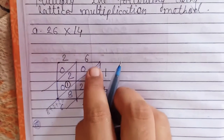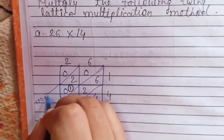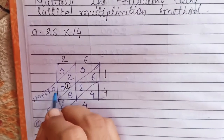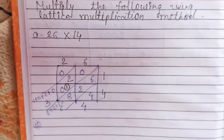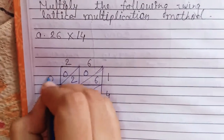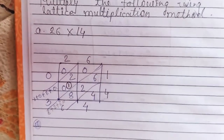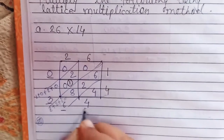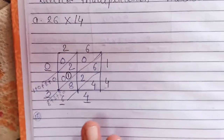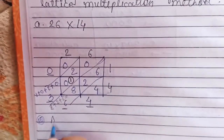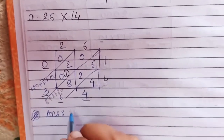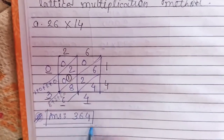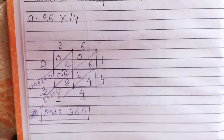Now, 1 plus 0 plus 2 plus 0: 1 plus 2 is 3, plus 0 is 3. And here there is nothing, so write 0. So the answer, underlined: 0, 3, 6, 4. There is a 0, so there is no thousand place value. Write the answer directly: 3, 6, 4. The answer is 364.